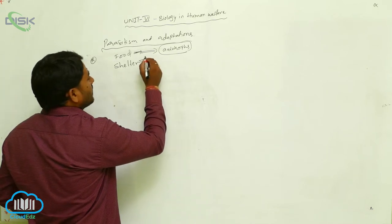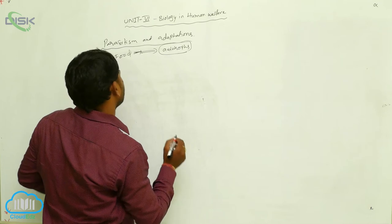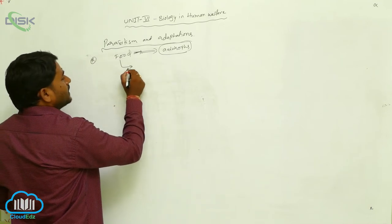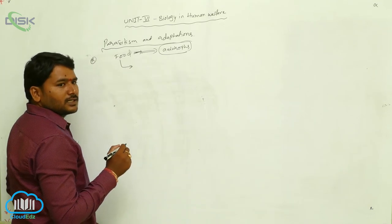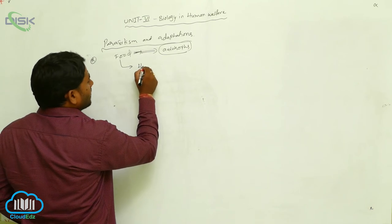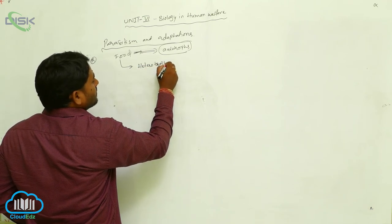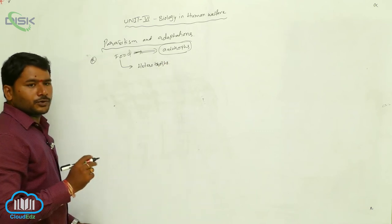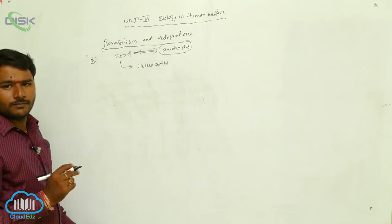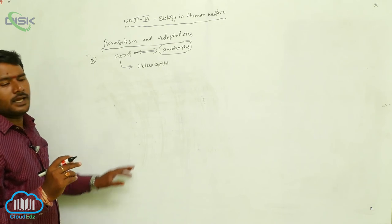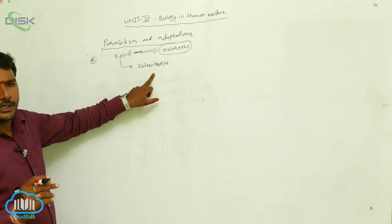Some organisms are not preparing their food materials themselves; they depend on other animals, so they are called heterotrophs. So here we have autotrophs and heterotrophs.